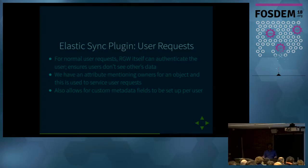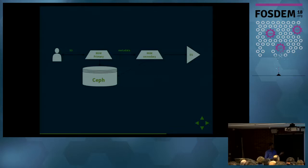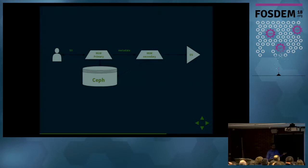We also have support for custom metadata fields being indexed as Elasticsearch fields — you can do dates and other kinds of attributes, not just basic text. This is a simple diagram of the architecture: you have a primary Rados Gateway and primary CEPH cluster as your regular storage, then you configure a remote zone and an RGW that only reads metadata from the primary cluster — this can be in the same or a different CEPH cluster, though I'd recommend a different one for full redundancy. This Rados Gateway forwards the metadata to the Elasticsearch cluster. This is not just applicable for a single primary CEPH cluster — you can have a ring of three or four CEPH clusters like Amazon US East, US West, and Europe Central, all forwarding metadata to a single Elasticsearch cluster.